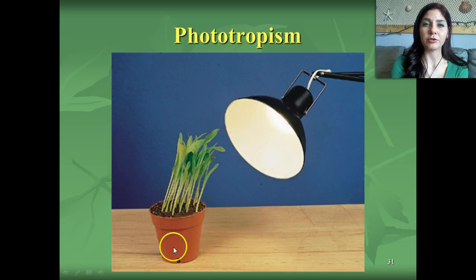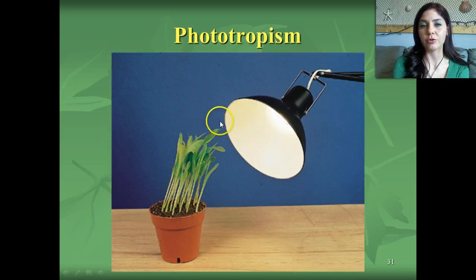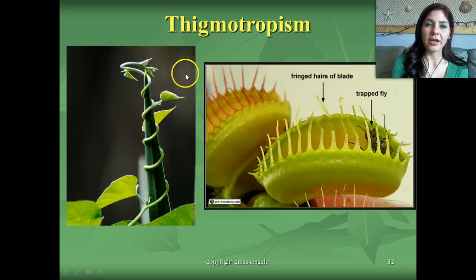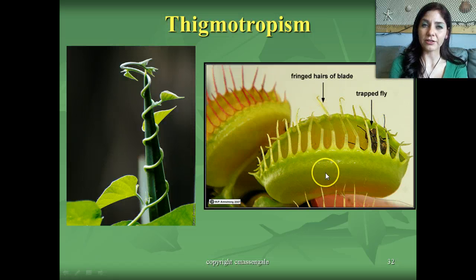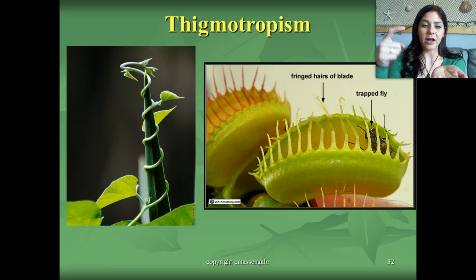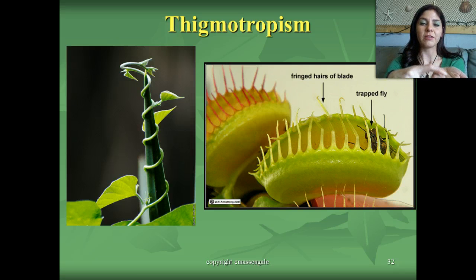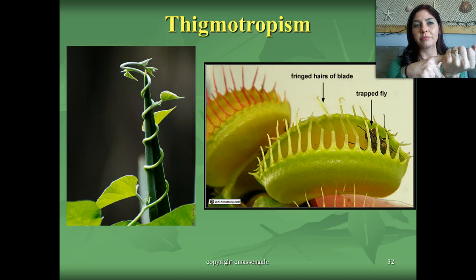Here's a bigger example of phototropism. If the plant is exposed to a light source, that plant is going to grow towards the light — that's a positive tropism. Thigmotropism is when the plant responds to touch; as you can see, this vine right here is wrapping around this stake. Another example of thigmotropism is this Venus flytrap. As soon as a fly lands on top of it, it sets off a response because the fly has touched the plant, and the plant wraps around the fly and dissolves it to absorb its nutrients.